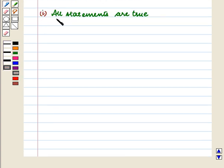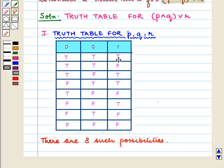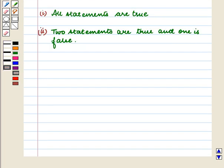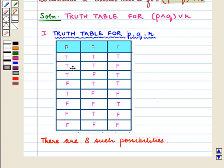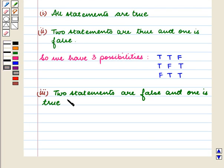The first possibility is all statements are true. So in the first row we write the truth values T for P, Q and R. The second case can be two statements are true and one is false. So the next three rows will be: P is T, Q is T, R is F; P is T, Q is F, R is T; and P is F, Q is T, R is T. The third possibility can be two statements are false and one is true.